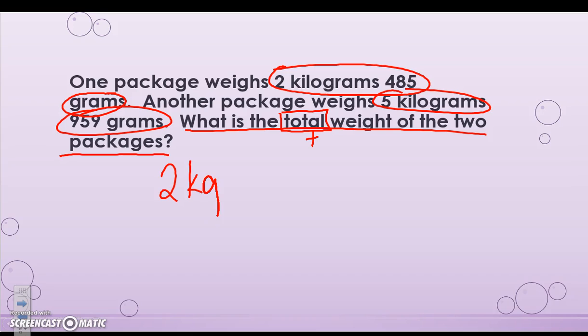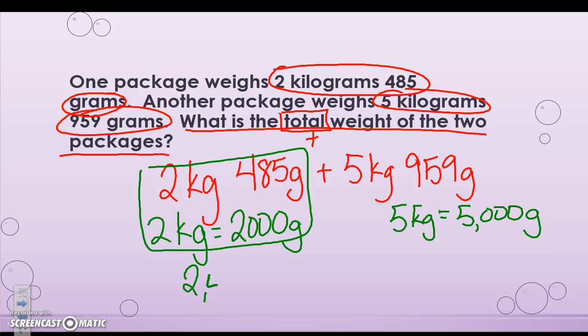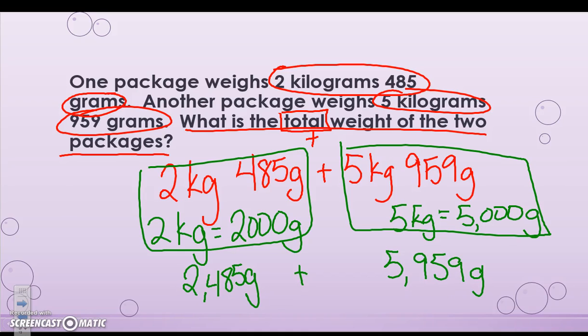So I know I need to add 2 kilograms 485 grams plus 5 kilograms 959 grams. Now these units are not the same, so I first need to convert. I know that 2 kilograms equals 2,000 grams and 5 kilograms equals 5,000 grams. So altogether this number is 2,485 grams plus 5,959 grams. Now all I need to do is add them together.